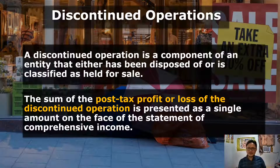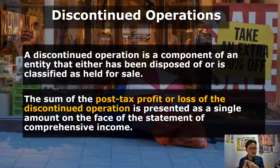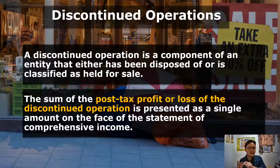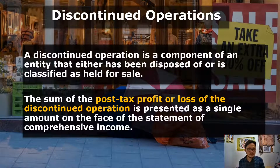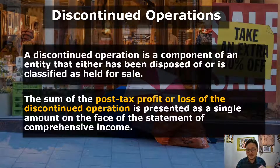In summary: non-current assets held for sale and disposal groups are treated as current assets. For discontinued operations, we are concerned with the income or loss from discontinued operations. Let's head to illustrations to clarify what we've been discussing.